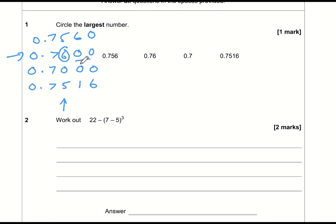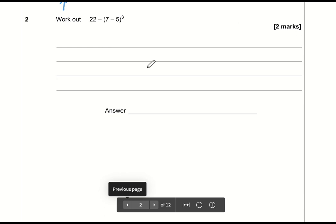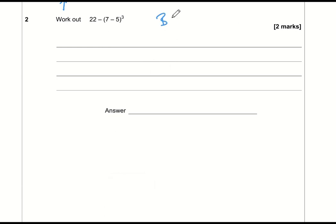Work out 22 minus 7 minus 5 cubed. This is a question all about BIDMAS. First we need to deal with these brackets. Inside the brackets we have 7 minus 5, which is 2, so let's rewrite the question: 22 take away 2 cubed.